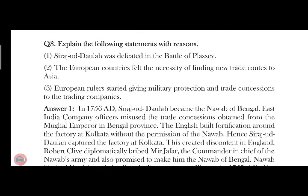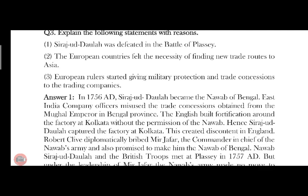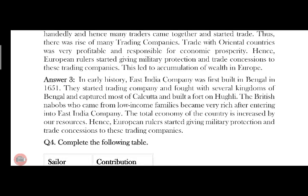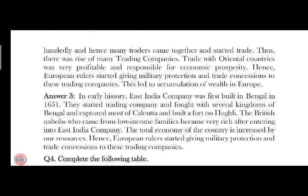Question No. 3: European rulers started giving military protection and trade concessions to the trading companies. The Vyapari Kendra would increase. The answer is 3: In early European history, the East India Company was first established in Bengal in 1651. They started the trading company, and the several kingdoms of Bengal gave military protection and trade to the trading company.